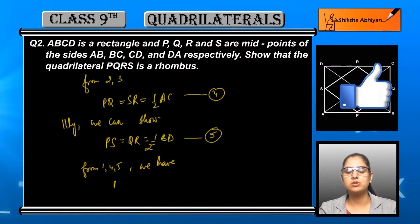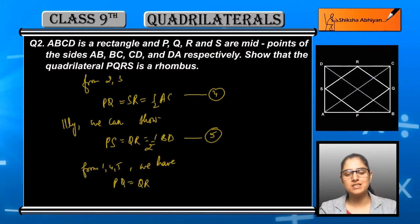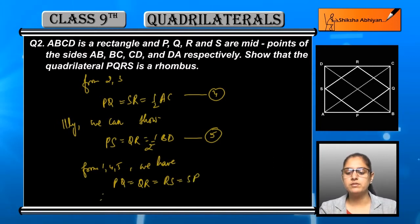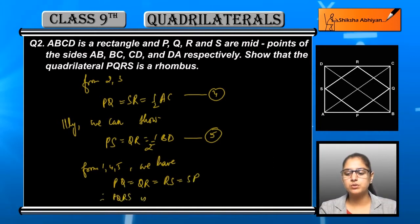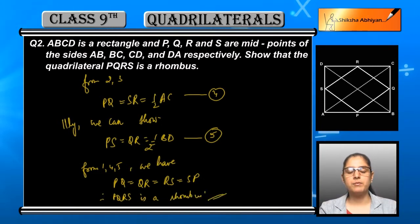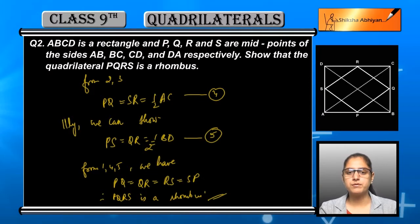In the same way, using diagonal BD, we can show that PS is equal to QR, which is equal to half of BD. This is equation number five.